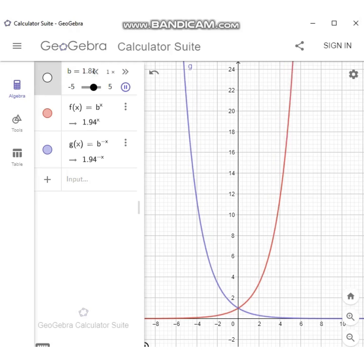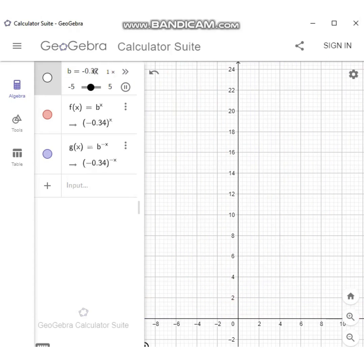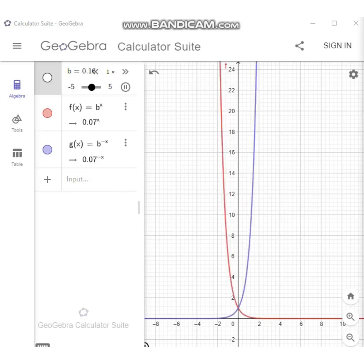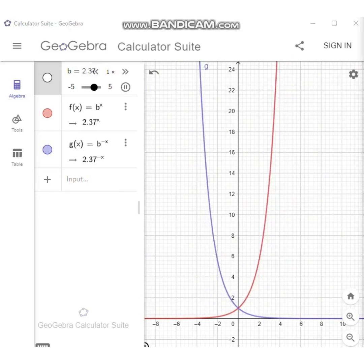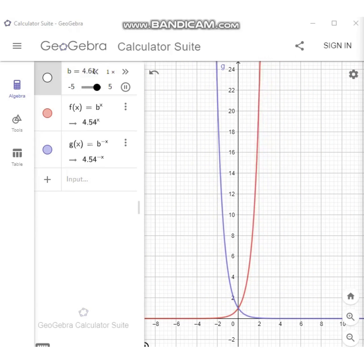Exponential functions have the form f(x) = b^x, where b is greater than 0 and b is not equal to 1. Just as in any exponential expression, b is called the base and x is called the exponent.